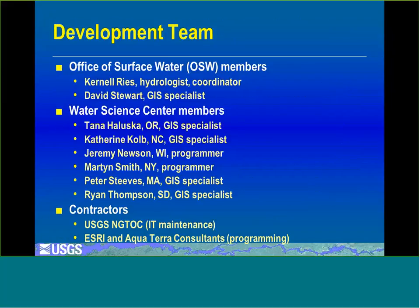The StreamStats application is developed by a national team that consists currently of eight people. I'm the coordinator of that team, and we have in addition five GIS specialists and two programmers. I'm the only person on the team that works full-time; the rest work half-time or less. No two of us are in the same office throughout the country. In addition to the team members, we have contractors — we contract to the USGS NGTOC facility in Denver to host our IT infrastructure, and we also contract to ESRI for GIS programming and Aquaterra consultants for database programming.